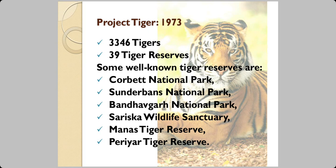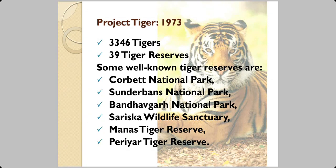Project Tiger started in India in 1973. At the beginning of the 20th century there were 55,000 tigers; numbers declined sharply before the project began. Today there are 3,346 tigers and 39 tiger reserves in India. Some well-known reserves include Kanha National Park. Madhya Pradesh has 75 percent of its area under forest cover and is known as the tiger state of India. Jim Corbett wrote that the tiger is really a gentleman at heart.